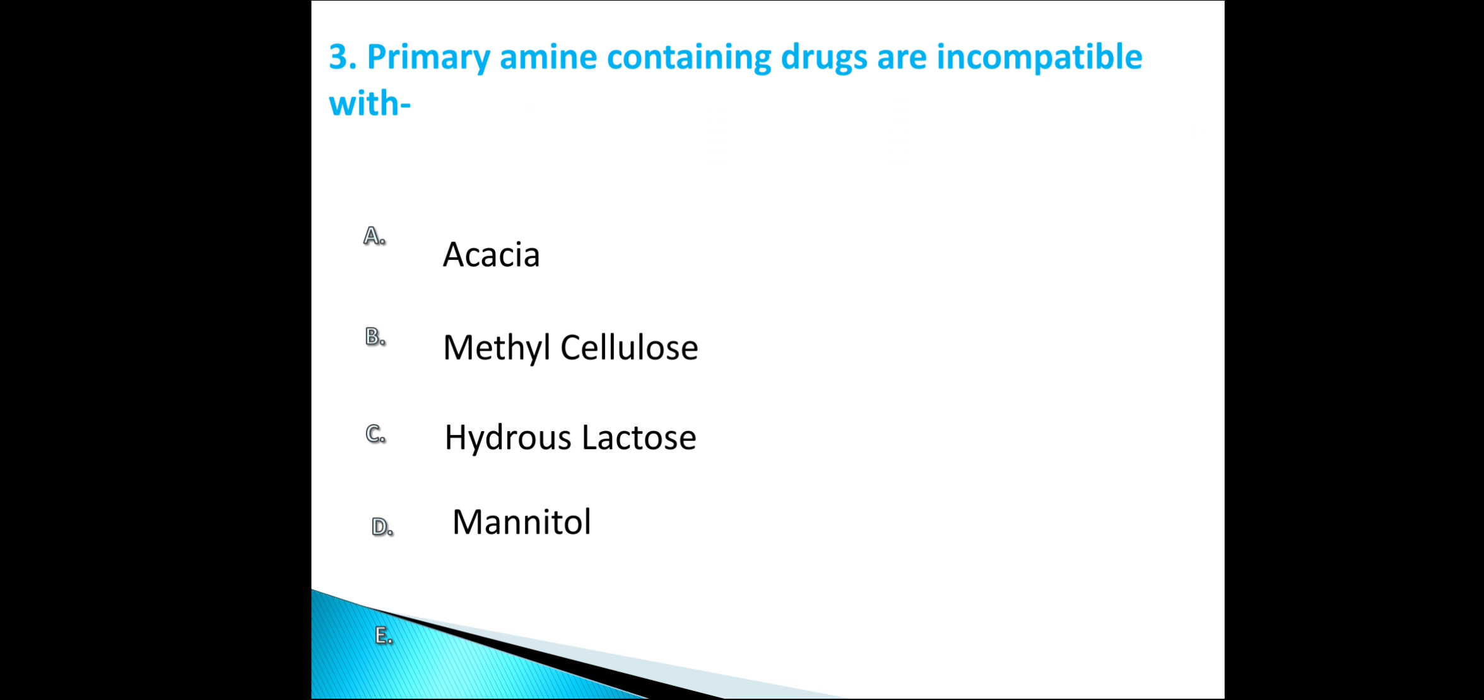Here Acacia is used as binding agent. Methyl cellulose may be used as diluent. Mannitol may be used as diluent or sweetening agent. So option C is correct answer for question number 3.